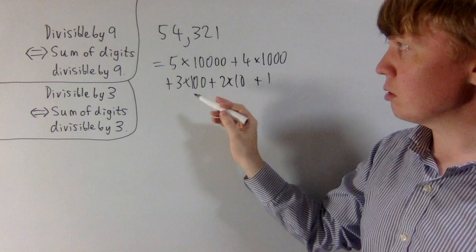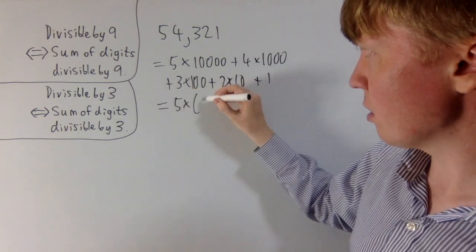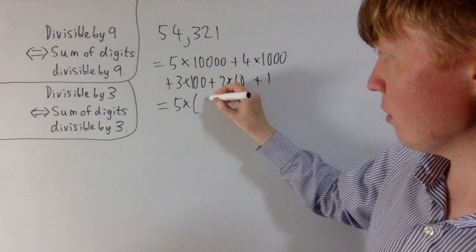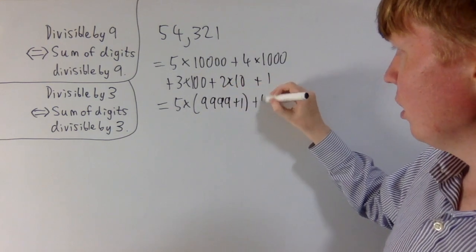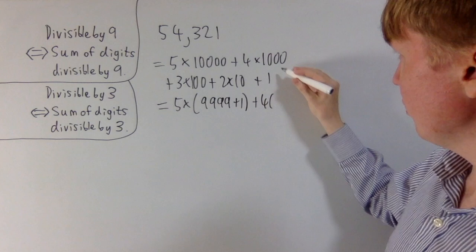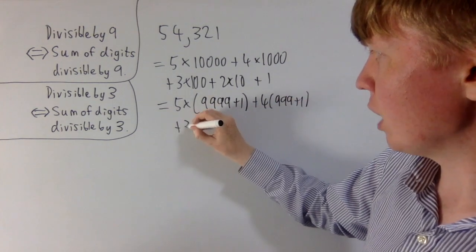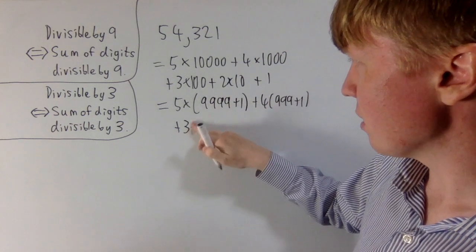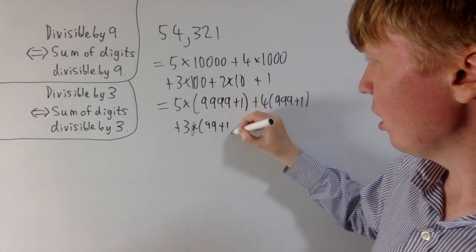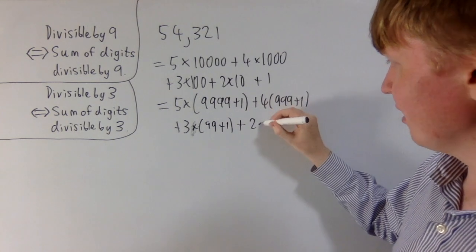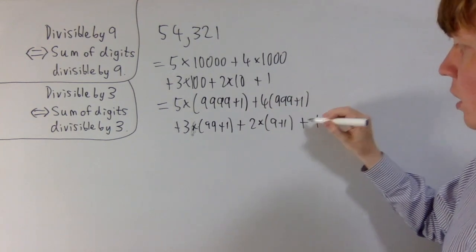The next thing we're going to do is write all of our powers of 10 in a slightly different way. We'll write 10,000 as 9,999 plus 1, and 1,000 as 999 plus 1. We'll write 100 as 99 plus 1, and finally 10 as 9 plus 1, and the 1 we leave alone.